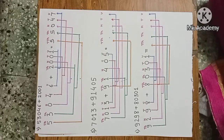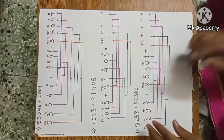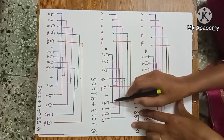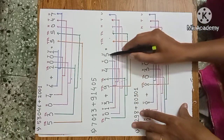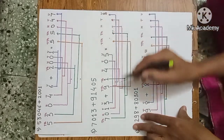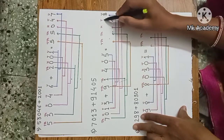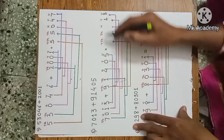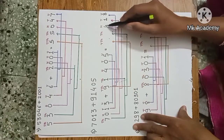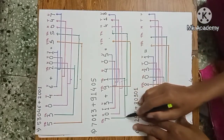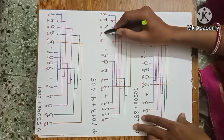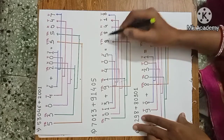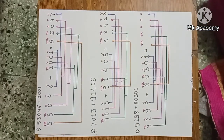Fifth example: 7,013 plus 91,405 in horizontal arrangement. Start from unit place: 3 units plus 5 units is 8. Tens: 1 ten plus 0 ten is 1 ten. Hundreds: 0 hundreds plus 400 is 400. Thousands: write as it is. Ten-thousands: write down here as it is. The answer is 98,418.